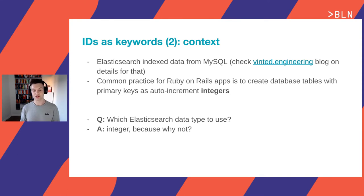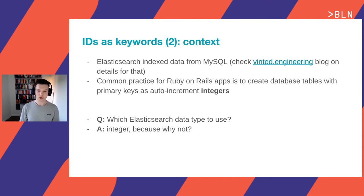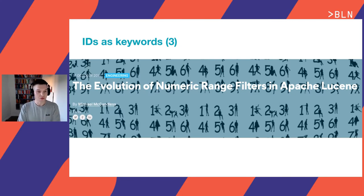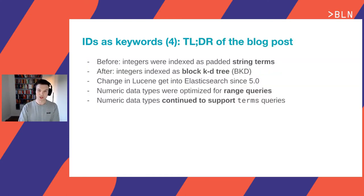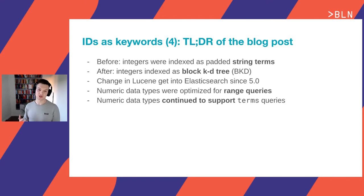So here's a little quiz: which Elasticsearch data type would you use to store those integers from MySQL? If your answer is 'integer, why not,' I hope the next few slides will show you that this is not always the correct answer. In 2016, there was a blog post on the Elasticsearch website written by Michael McCandles about the evolution of numeric range filters in Apache Lucene. The TL;DR: before the change, integers were indexed as padded string terms; after the change, integers were indexed as block KD-trees.